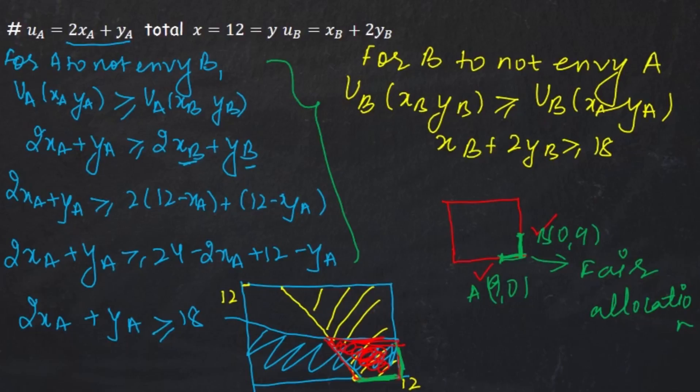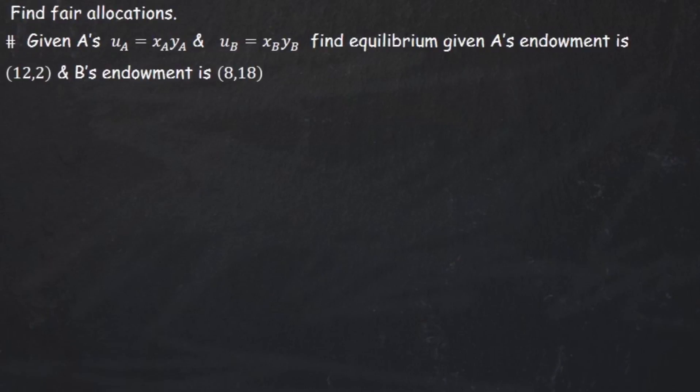The next question we do is, we have to find fair allocation given that A's and B's functions are Cobb-Douglas. We're given that A's endowment is 12,2 and B's endowment is 8,18. So the total again is a square box, it's a 20,20 box. But we're supposed to find out the fair allocation. So firstly, for fair allocation, we know that we need to find out the Pareto efficiency. I'm not again going to do Pareto efficiency. Pareto efficiency you guys can take out and this is the line of Pareto efficiency.